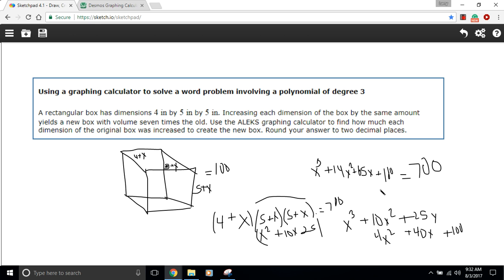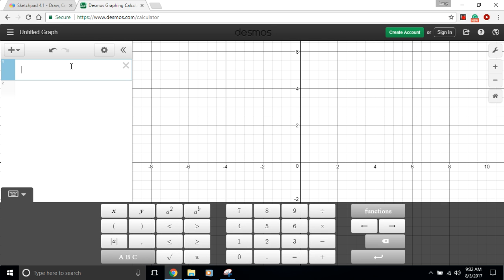To find the zeros of this function, we need to set the function equal to zero. So I'm going to subtract 700 from both sides and then just rewrite this function. I'll put it up here nice and big. So x cubed plus 14x squared plus 65x minus 600 equals zero. So this is the function that we can type into our graphing calculator and then just take a look at the zeros. Let's see how that works. So I'll try to type it in here. We've got x cubed plus 14x squared plus 65x minus 600.